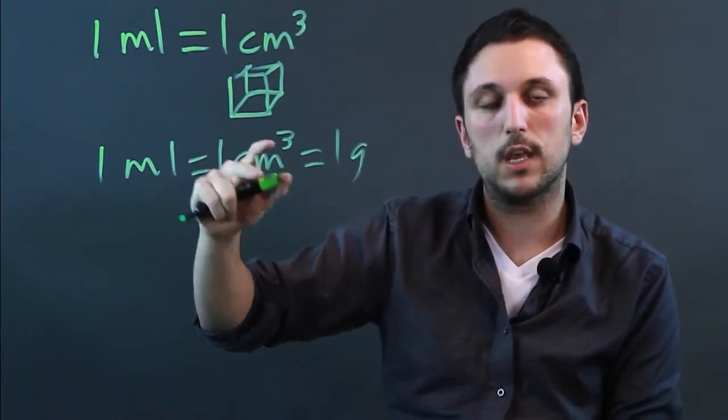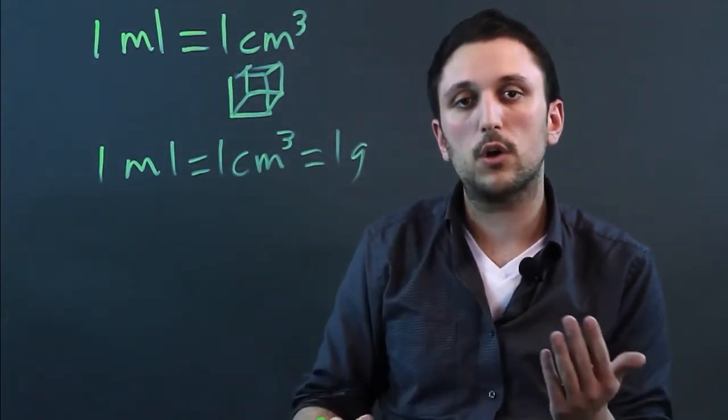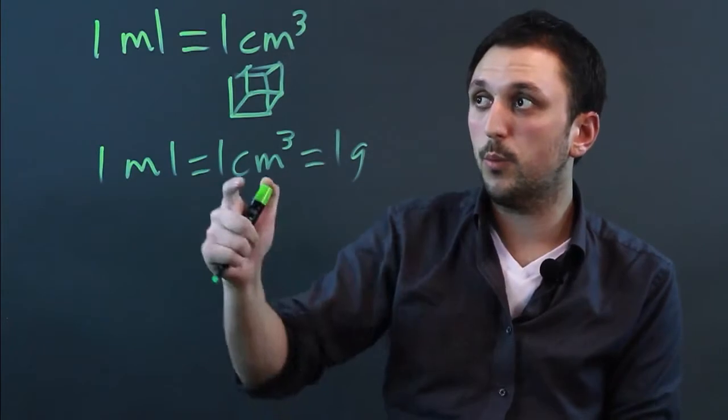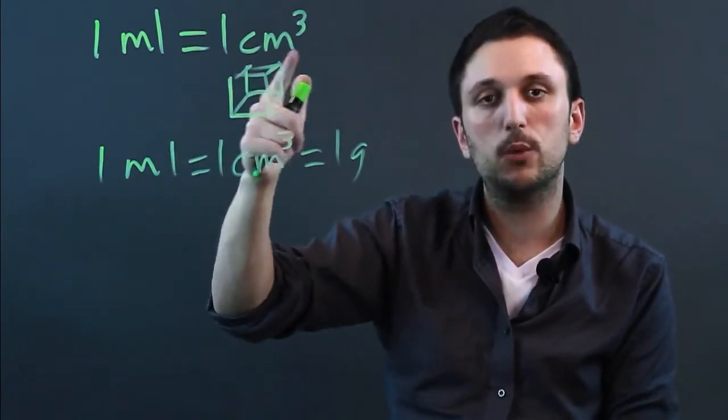Otherwise, the conversion is not the same. You would have to figure out if it's salt or sugar or stone. But in general, with water, one milliliter equals one cubic centimeter.